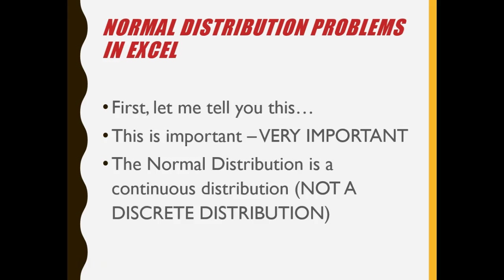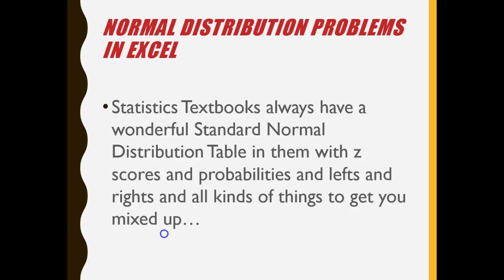With the normal distribution we can only find less than, greater than, or the probability between two values. I will explain this to you as we go along.